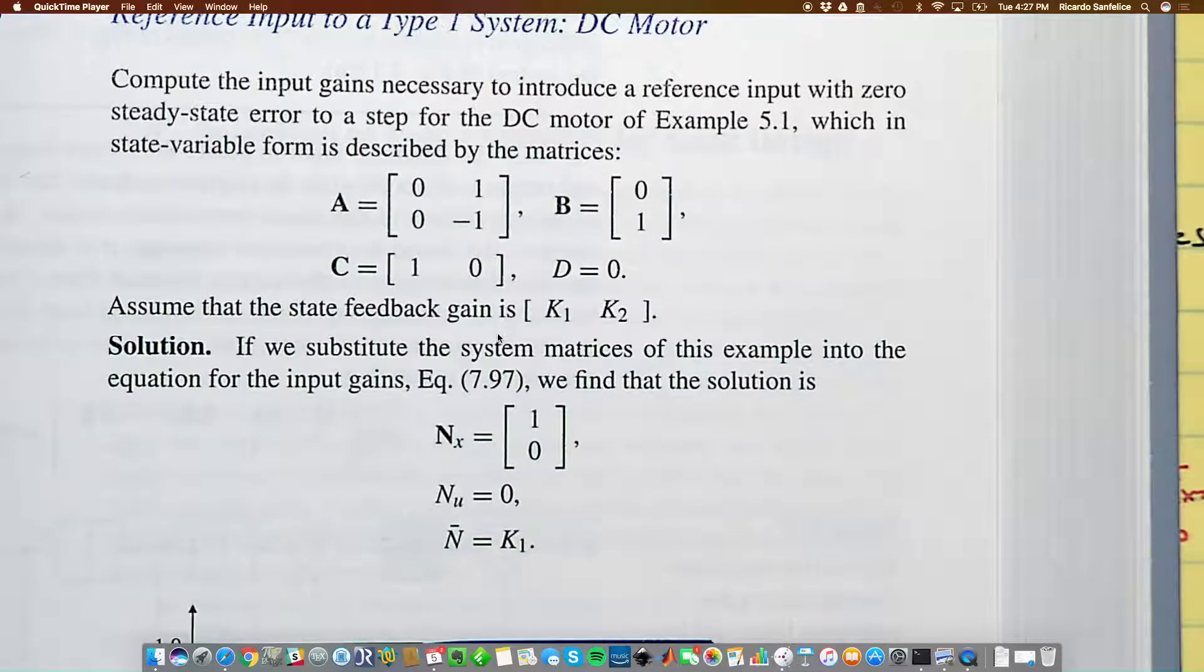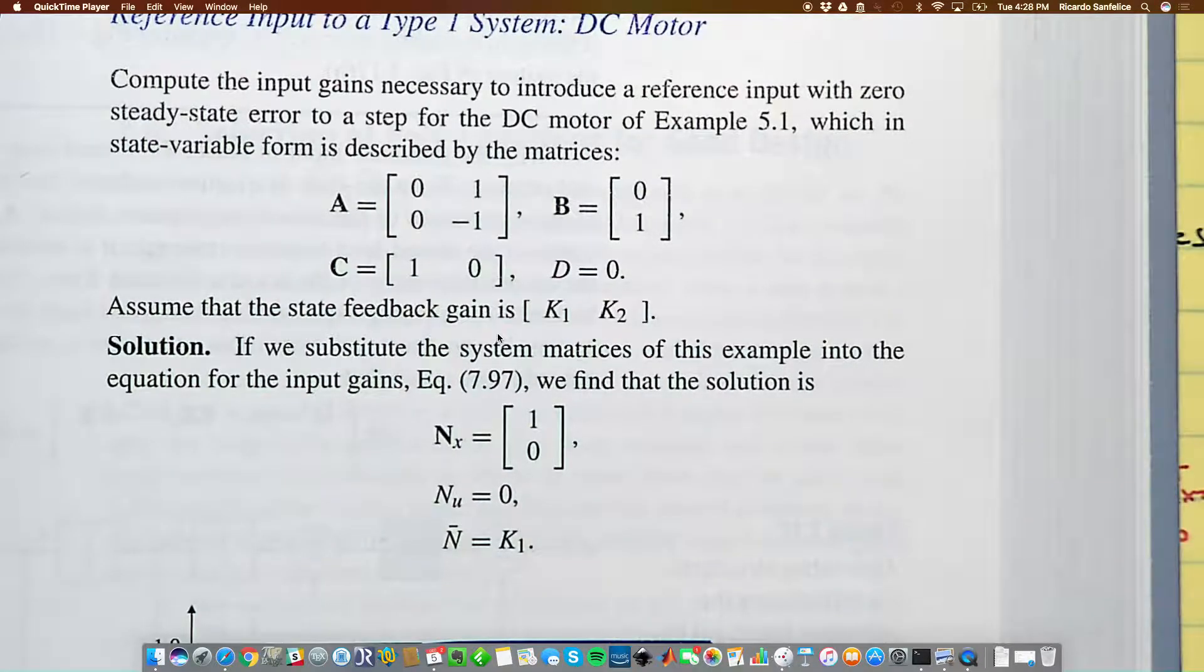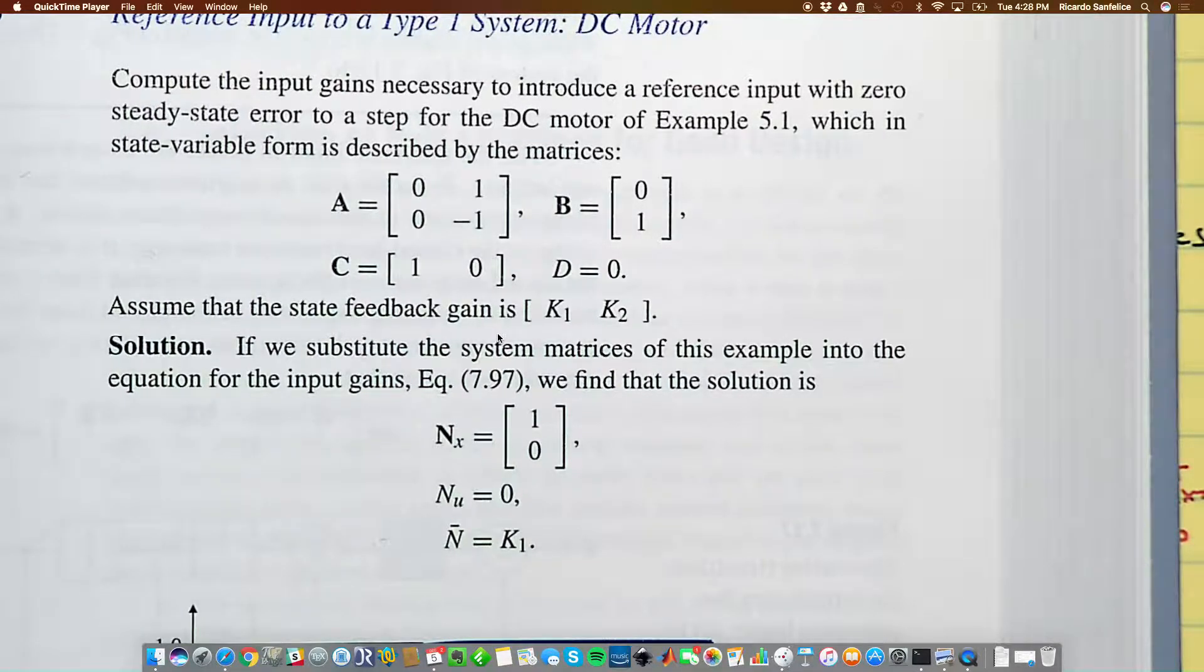So this is example 7.18 where we would like to introduce a reference input and the equations of the DC motor are in example 5.1 and they are given by these expressions right here. And we are doing feedback of one of the variables so it is a static single input single output. And if we go to those equations which are equation 7.87 if we plug this a, b, c and d and then we solve it by inverting that matrix a, b, c, d then we end up with the following N_X and the following N_U which when everything gets multiplied which was precisely N_U plus k N_X then that N bar number becomes k1. So I wanted to show you this because the design of the k is for stability but it's also playing a role in the input that you need to apply for tracking.